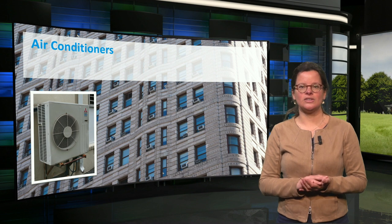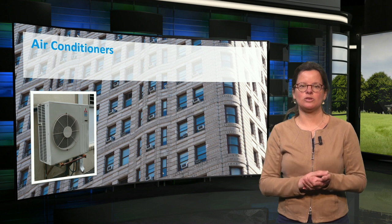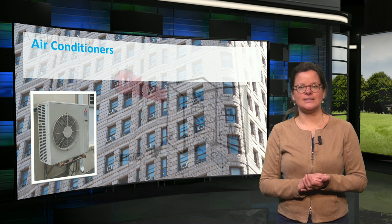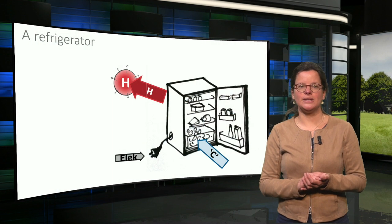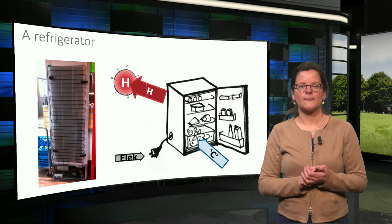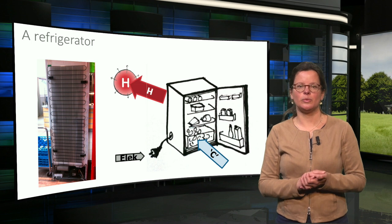In fact, the air conditioner transports heat from a cold room to the warmer outside air by adding a little bit of electricity. The same happens in a household refrigerator: heat is extracted from the inside of the refrigerator and is disposed at the back of the fridge. Both air conditioners and refrigerators work with the heat pump principle.